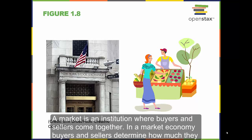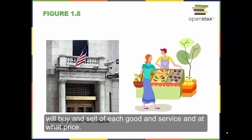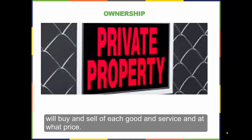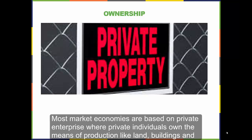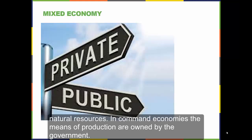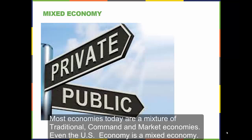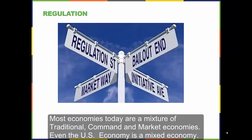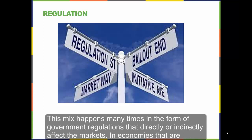A market is an institution where buyers and sellers come together. In a market economy, buyers and sellers determine how much they will buy and sell of each good and service, and at what price. Most market economies are based on private enterprise, where private individuals own the means of production like land, buildings, and natural resources. In command economies, the means of production are owned by government. Most economies today are a mixture of traditional, command, and market economies — even the U.S. economy is a mixed economy. This mix happens many times in the form of government regulations that directly or indirectly affect the markets.